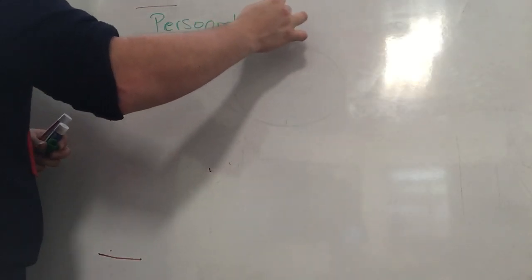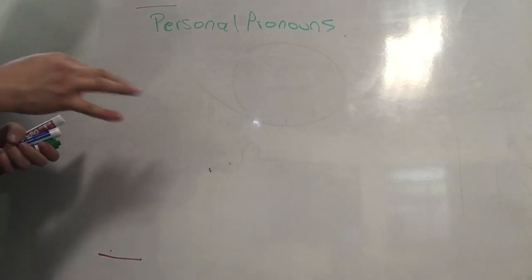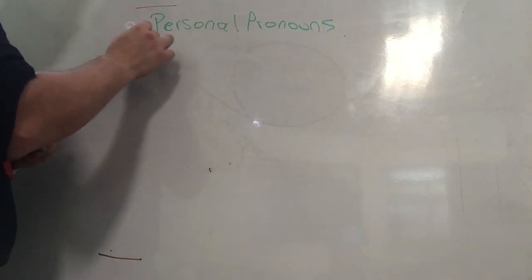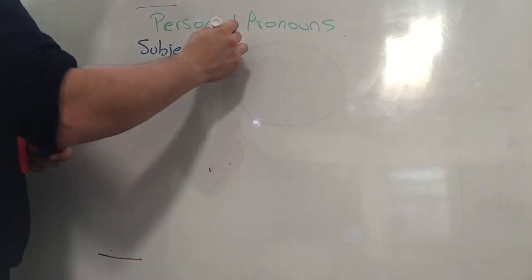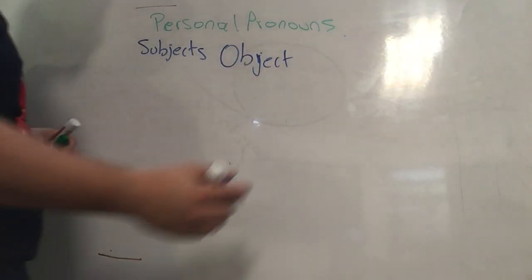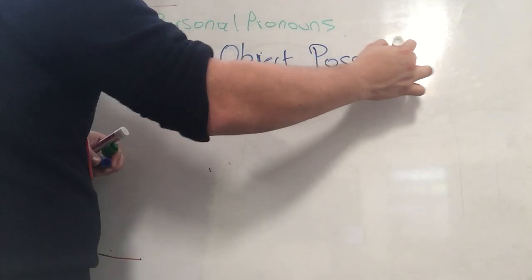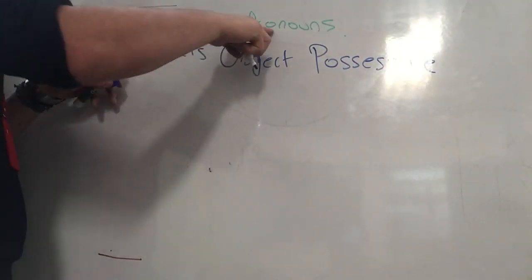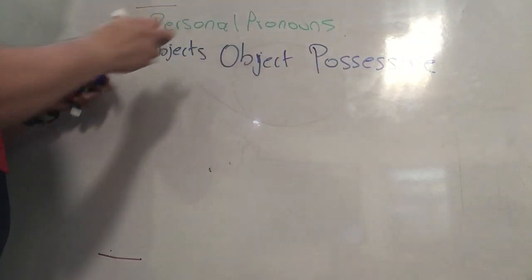Now, remember that we have three kinds of personal pronouns: the subject pronouns, you are going to watch some of them, the object pronouns, and the possessive pronouns. Those three are all personal pronouns.